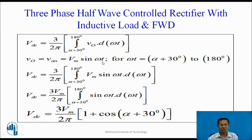Expression for DC voltage with freewheeling diode: Vdc = (3/2π) × integral from (alpha + 30°) to 180° of V0 dωt. In this duration, phase Van appears across the load. Therefore, Van = Vm sin(ωt). Substituting and solving, we obtain Vdc = (3 Vm)/(2π) × [1 + cos(alpha + 30°)].